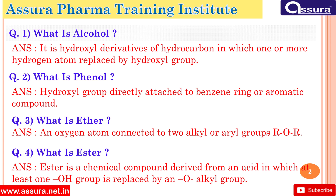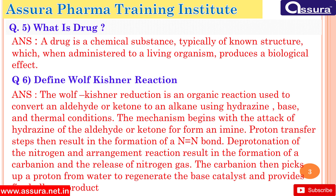What is ester? Ester is a chemical compound derived from an acid in which at least one -OH group is replaced by an -O-alkyl group. What is a drug? A drug is a chemical substance, typically of known structure, which when administered to a living organism produces a biological effect.